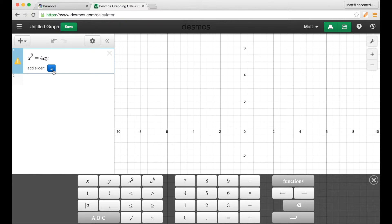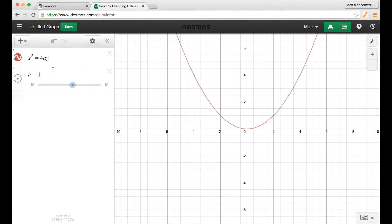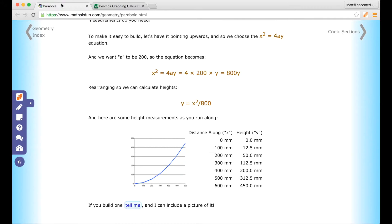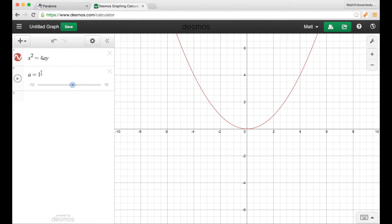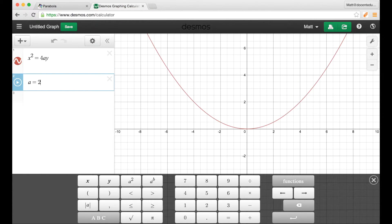And now here's prompting me if I wanted to add in a slider for A. And I am going to go ahead and do that so I'll click on that right there. And in this equation they set it so that A is equal to 200. So going back over to my graph, I'm going to go ahead and I can modify that to be 200.